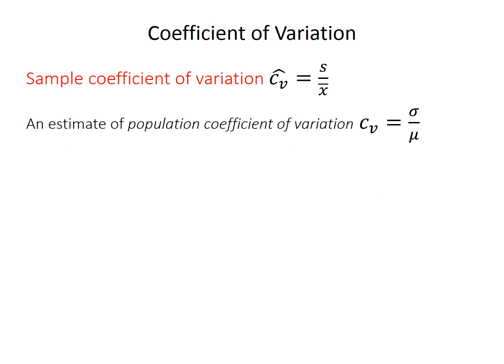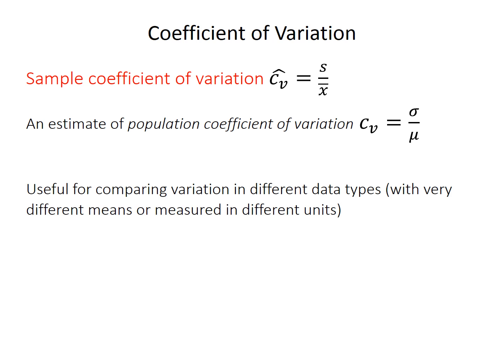So we can avoid that problem by calculating something called the coefficient of variation, which is just the standard deviation s, our sample standard deviation, divided by our sample mean x bar. Remember that we're always using a sample to estimate parameters of this larger population. So our sample coefficient of variation, CV with a little hat on it, is an estimate of the population coefficient of variation. You don't really see coefficient of variation that often, because it's only useful in very specific circumstances. But it can be useful for comparing dispersion if the two measurements have very different units, or if their means are very different.